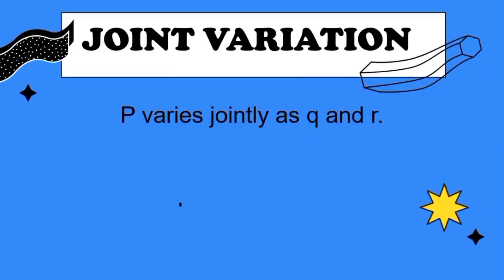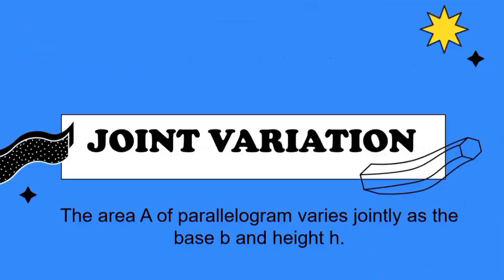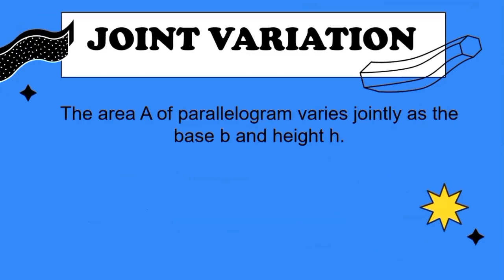Let's now try to translate statements into equations. 'P varies jointly as Q and R' can be written as P equals KQR. Do not forget K as your constant. As P increases, the values of Q and R also increase. Next, 'the area of a parallelogram varies jointly as the base B and height H' can be translated as the equation A equals KBH. If it uses a capital letter or small letter, you must follow that.